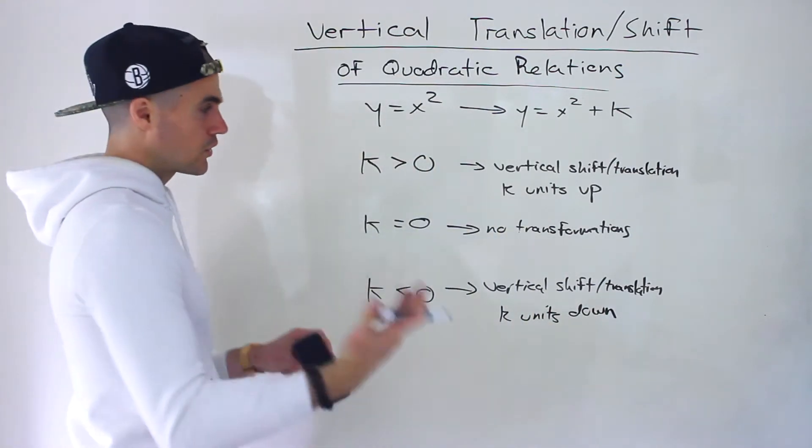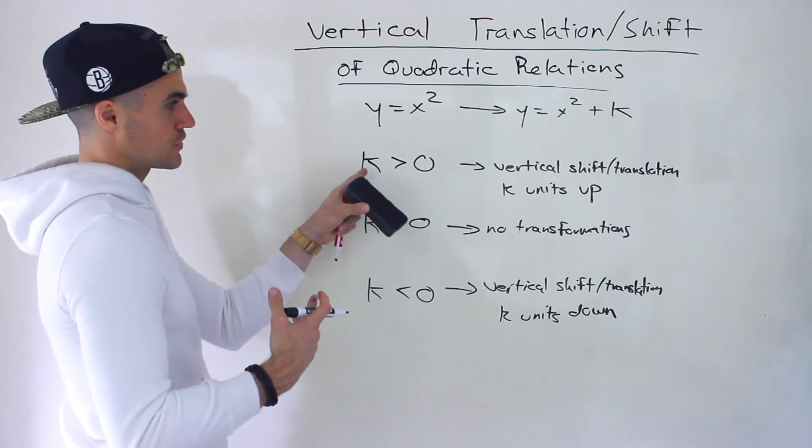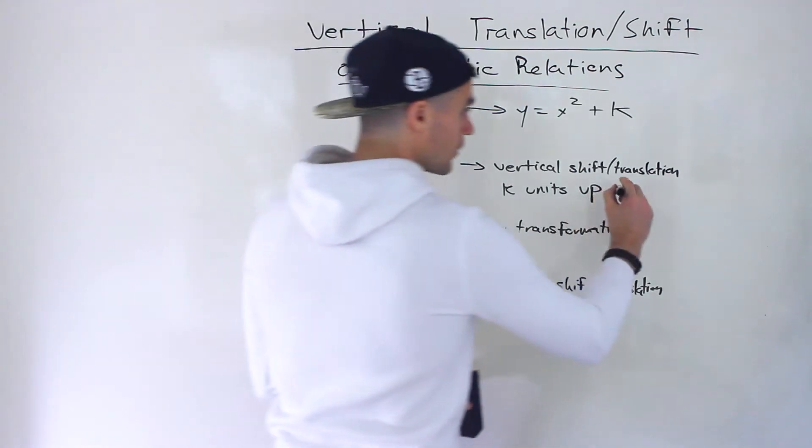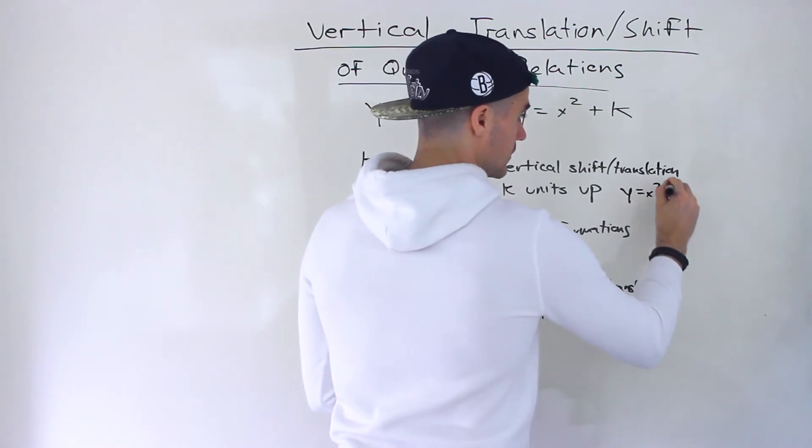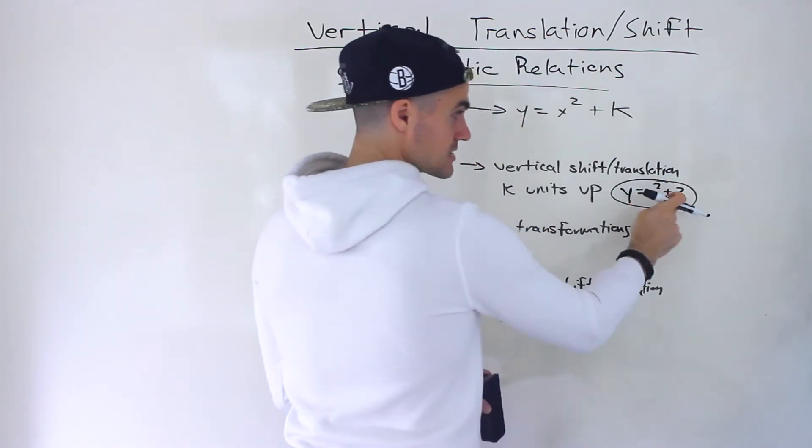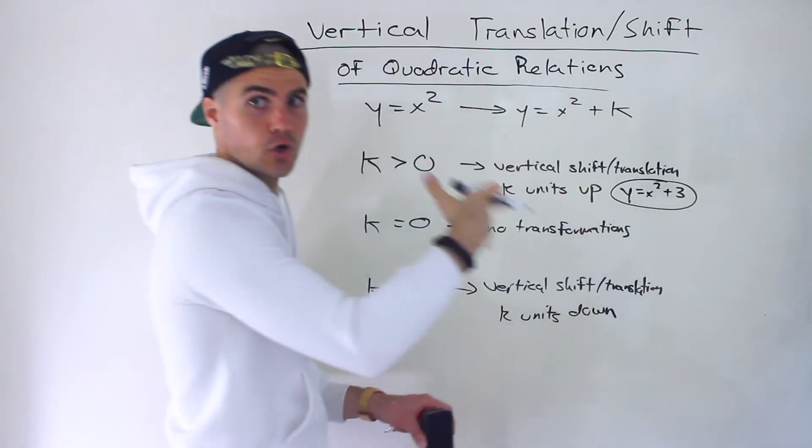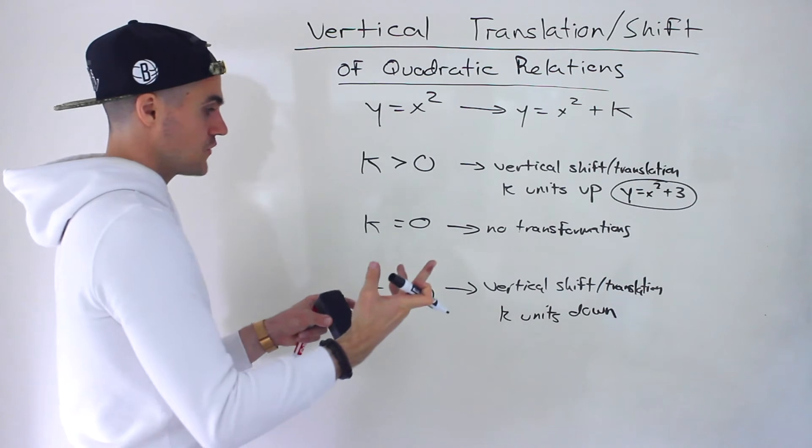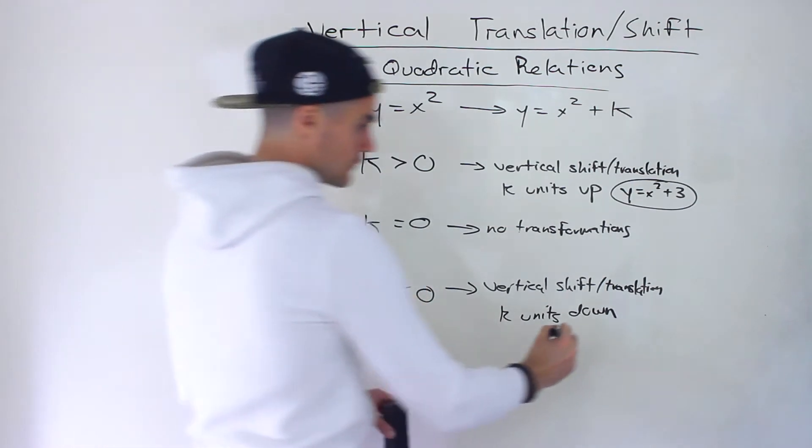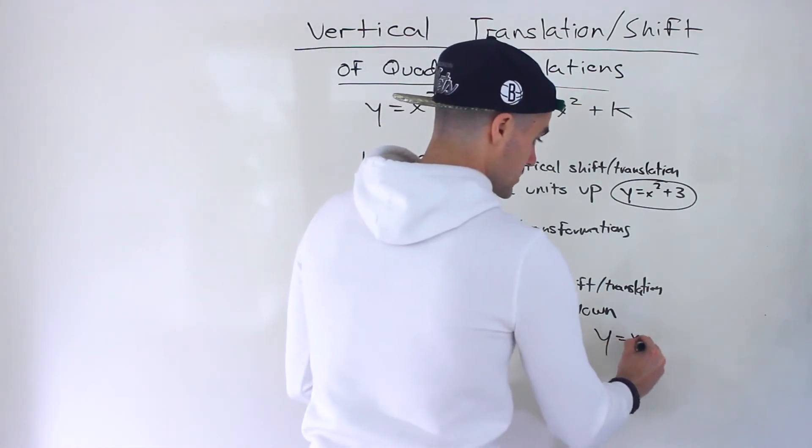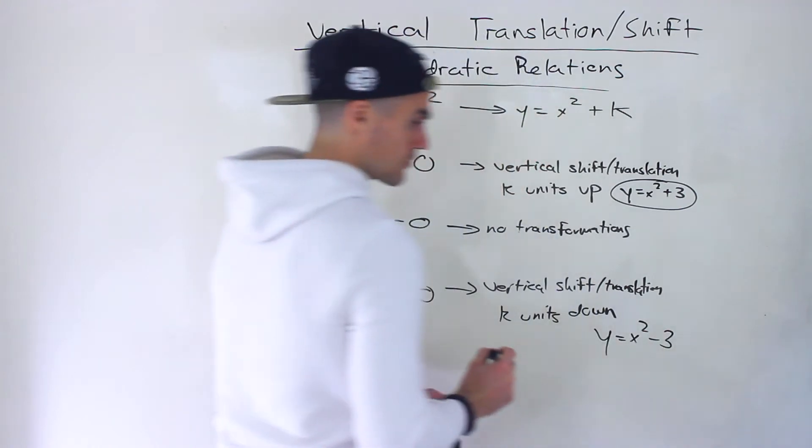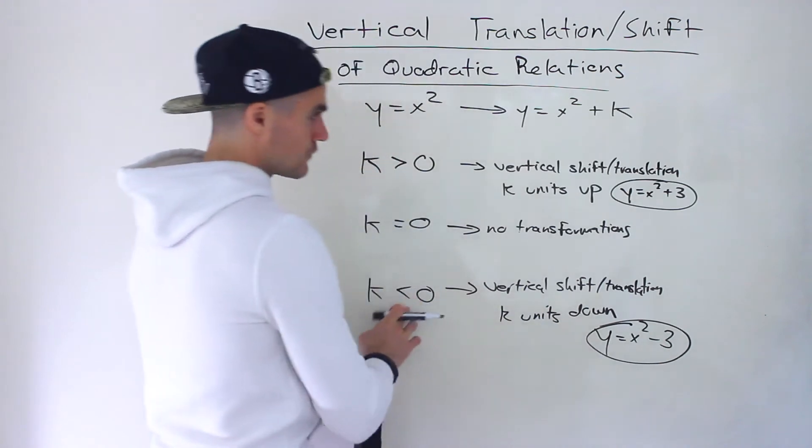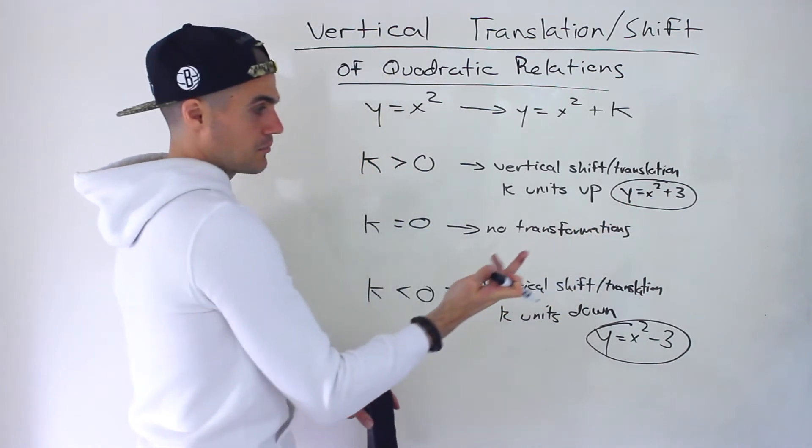Again, you don't have to worry about switching signs. For example, if k is positive 3, we get y = x² + 3. The k is 3 and in the equation it's positive 3. We don't have to worry about switching signs like with the h value. Or if it's negative, we have y = x² - 3. You can directly see the k value is negative or positive.